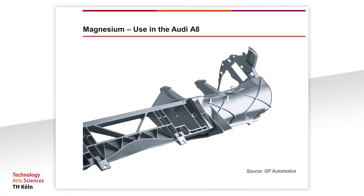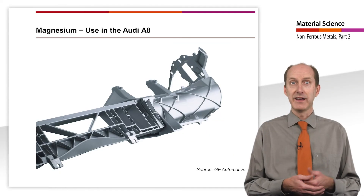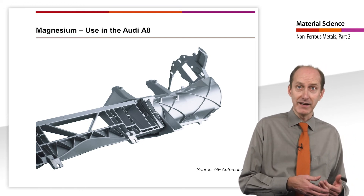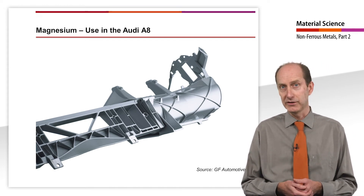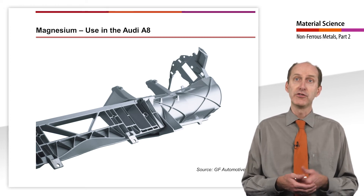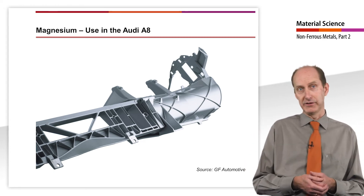The light metals aluminum and magnesium were combined for the instrument panel support of the Audi A8. With 5.4 kg it is only about half the weight of the conventional sheet metal component. A cast construction of aluminum on the driver side and one of magnesium on the passenger side made this possible. Both components are bolted together.